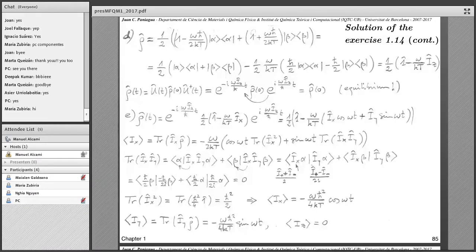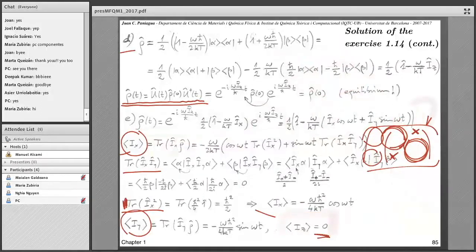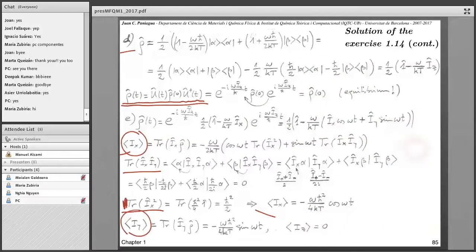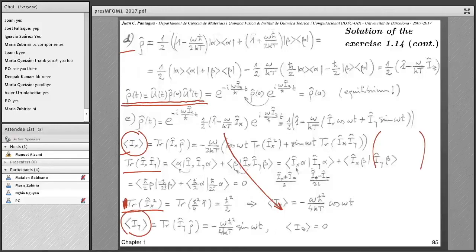Just a brief comment about a question we were discussing last day. One of you didn't see how this operator could lead to a vanishing value for the IZ component. And, in fact, I told you that it should be very easy to calculate the matrix representation of this density operator in the alpha-beta basis.